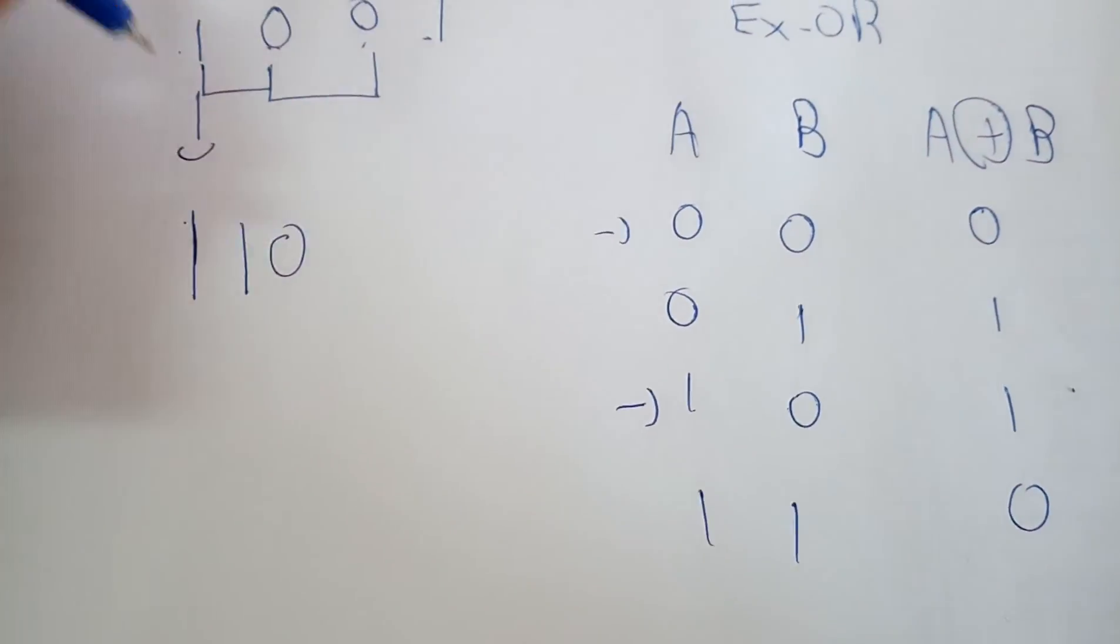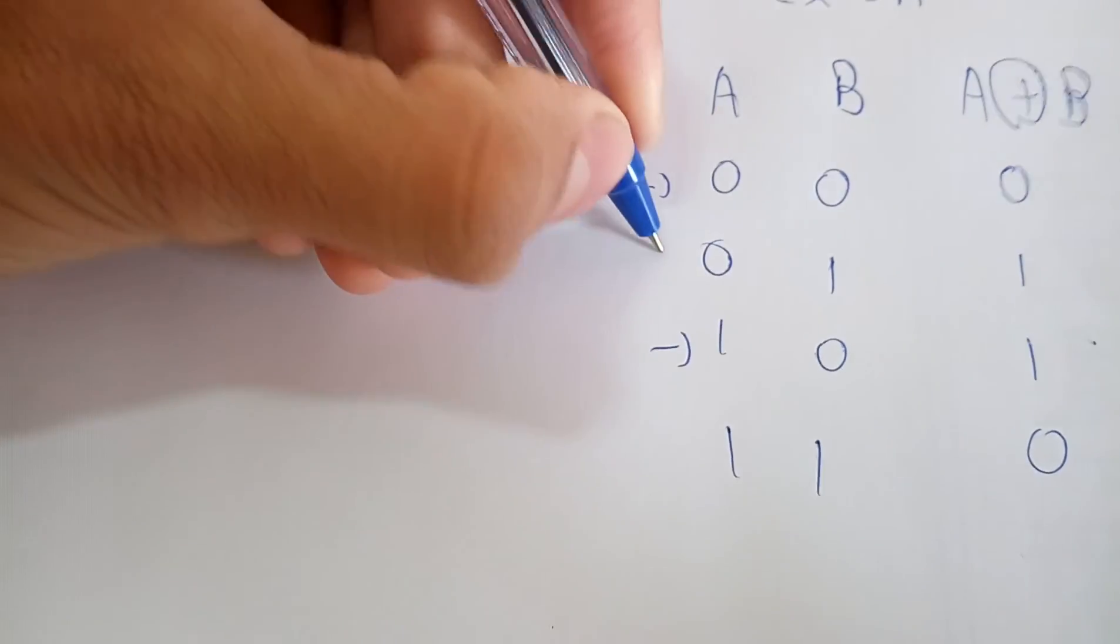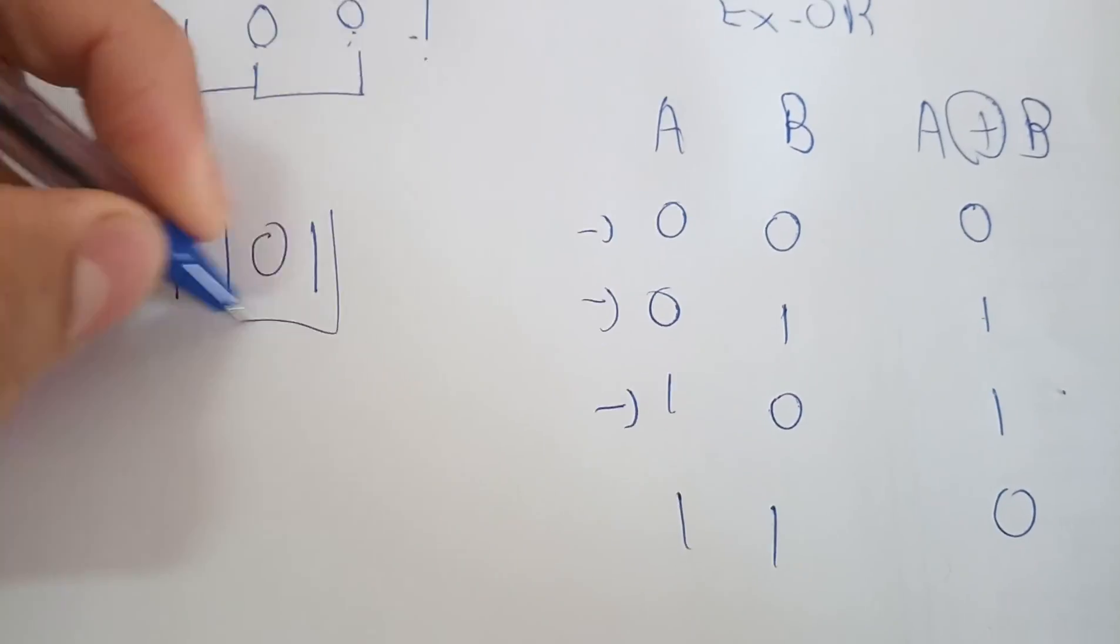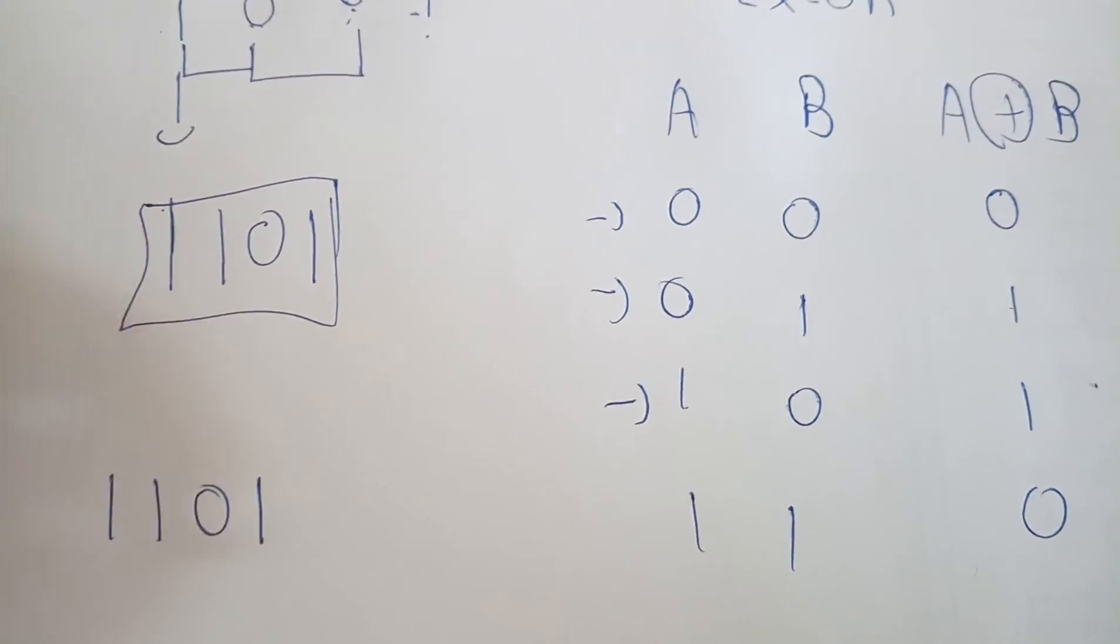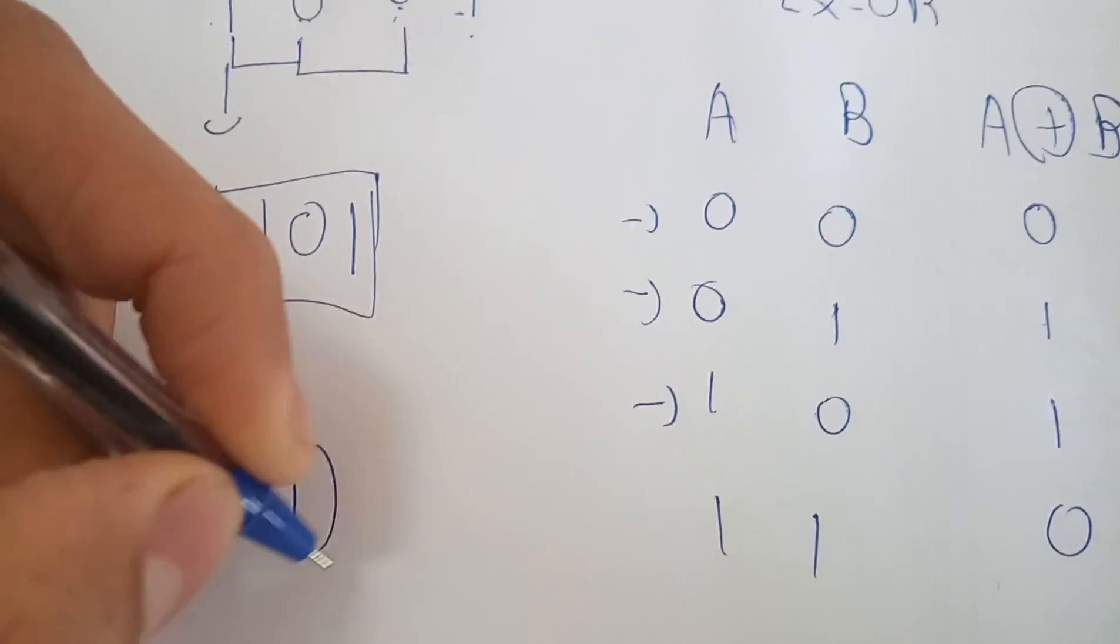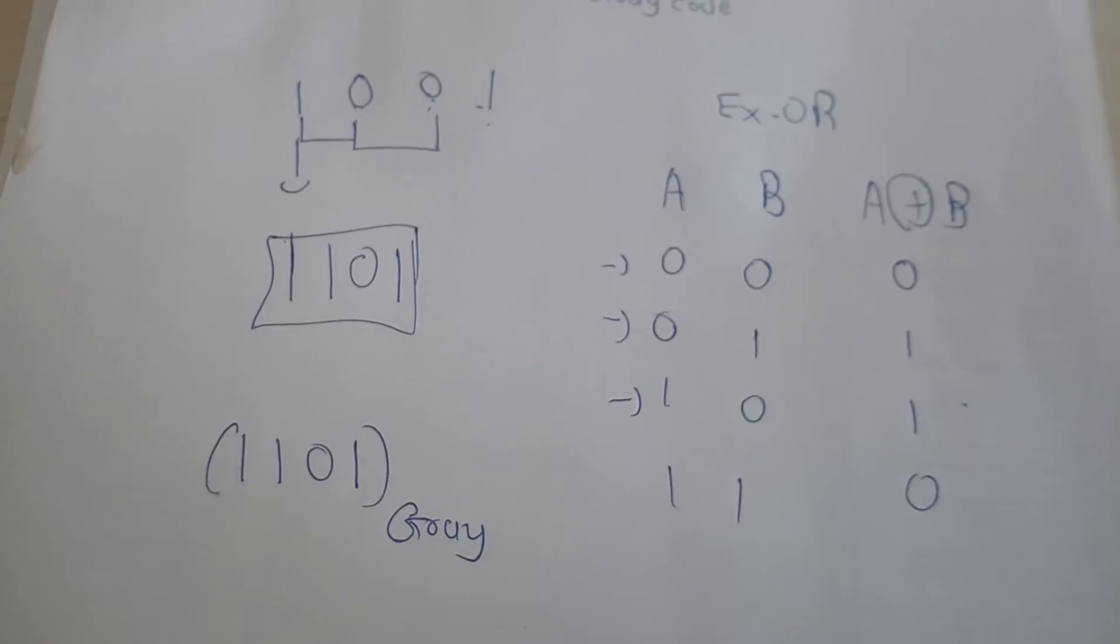And last, what will be the XOR of 0 and 1? 0 and 1 will be 1. So this is the answer. The Gray code conversion of 1001 will be 1101. Thank you.